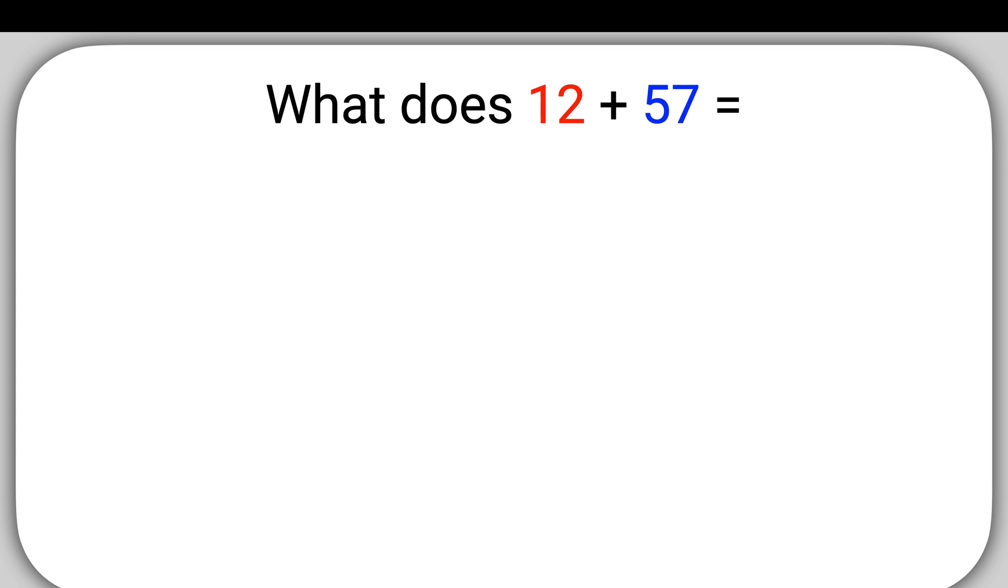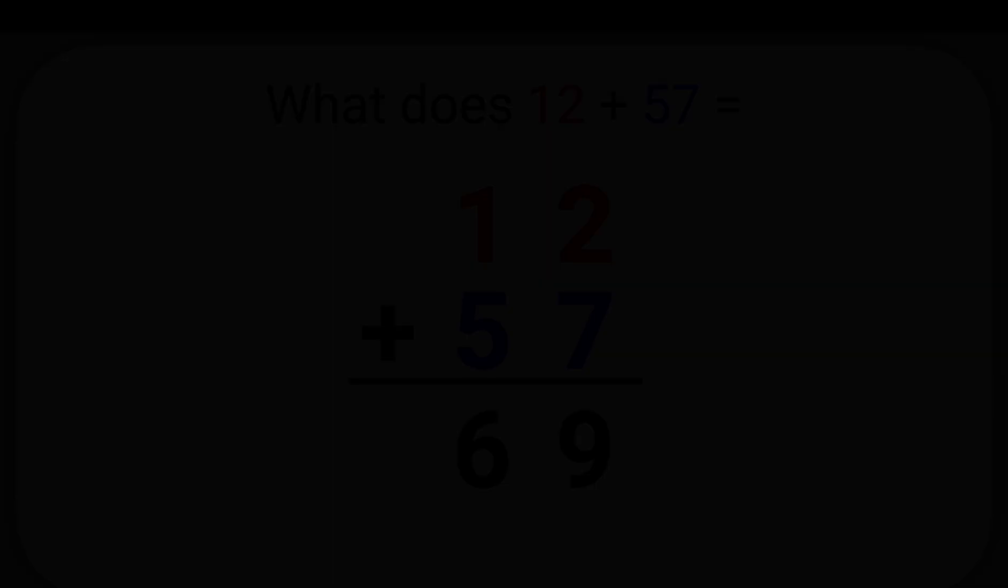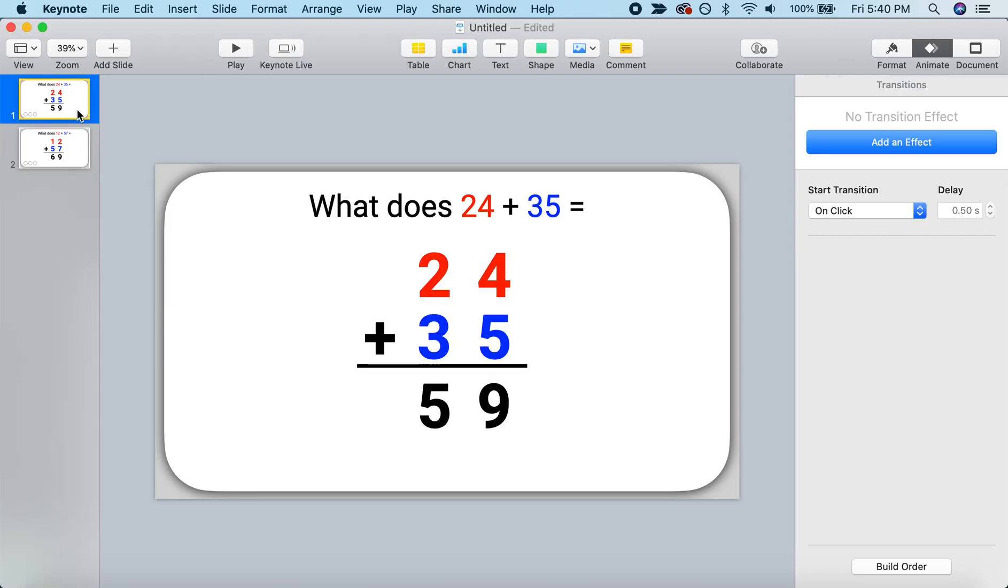But now if we play through this slide, 12 plus 57, we can solve that. 2 plus 7 is 9. 1 plus 5 is 6. And so you see how quick it was once we build that first slide. We can reuse all of the work and all of those animations for our future lessons or future problems.